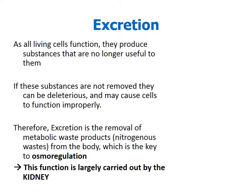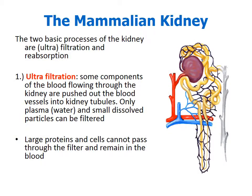If we have too much salt we need to get rid of it; if we have too much byproduct waste from cellular respiration we need to remove it. This happens in the kidney. Looking at the mammalian kidney, there are two basic processes: filtration and reabsorption. Filtration is where components are removed as blood flows through the kidney, pushed into the kidney tubules. Only small things like water can be filtered through; large proteins and cells remain in the blood.